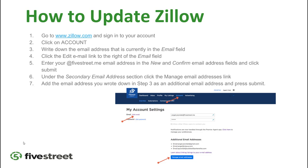The main places you typically get leads from are realtor.com and Zillow.com — you want to change the notification email on those so all messages come through Five Street. For realtor.com that's already taken care of, so leads from your listings go straight through your Five Street dot me email. For Zillow, log into your agent account — you can tell it's the agent account by the Agent Hub in the top right corner — then click Account.